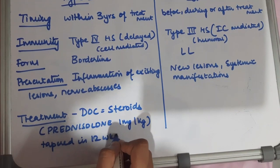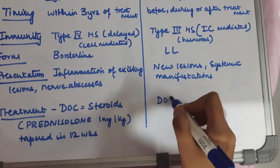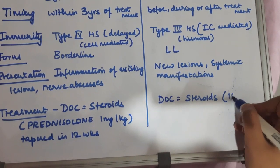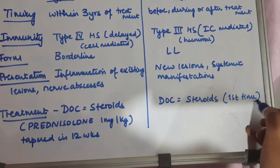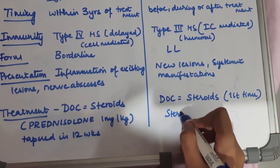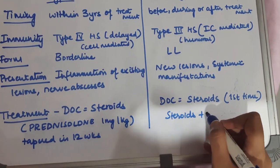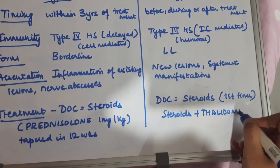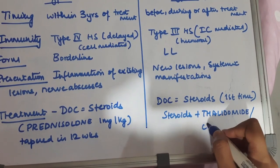In type 2 lepra reactions, if the patient presents with lesions for the first time, the drug of choice is steroids, which is again prednisolone at a dose of 1 mg per kg. However, if the patient presents repeatedly, along with steroids, clofazamine or thalidomide is added.